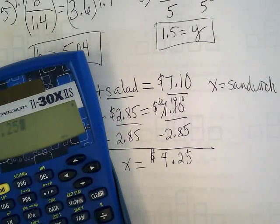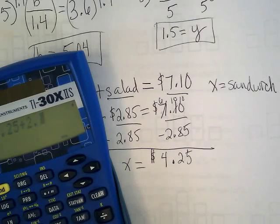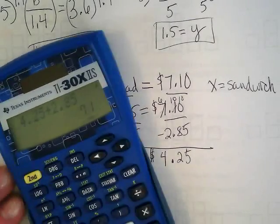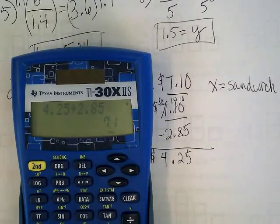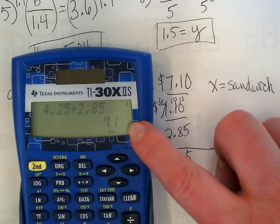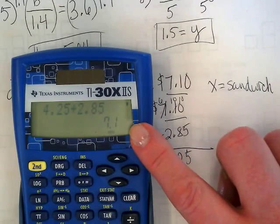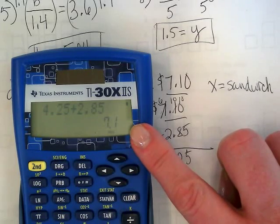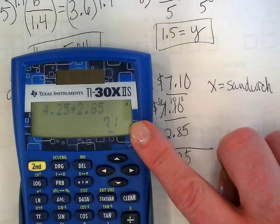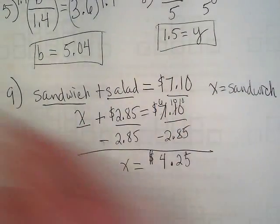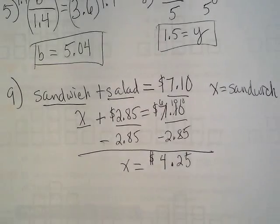And now I know that the sandwich is $4.25. And you can use your calculator to check. Does $4.25 plus $2.85 equals $7.10? It does. The calculator is not going to put the 0.10, it's just going to put 0.1, but we can think about this as money and we would put in a 0 as our placeholder for our penny spot, right?